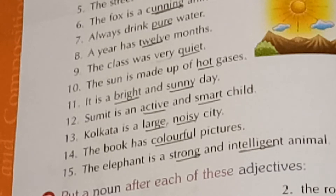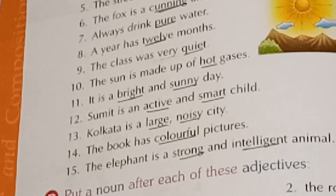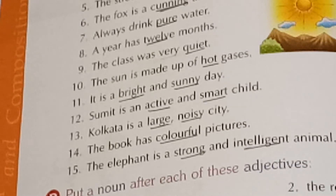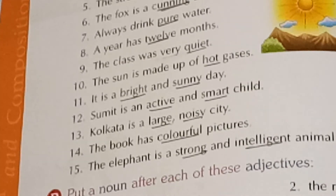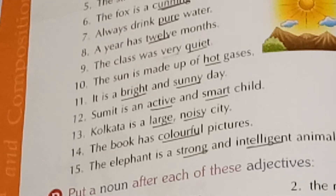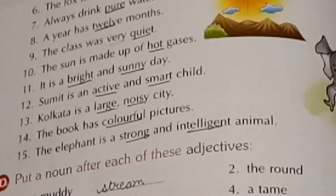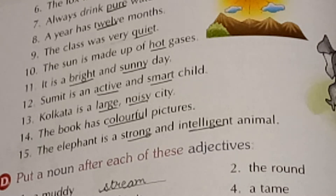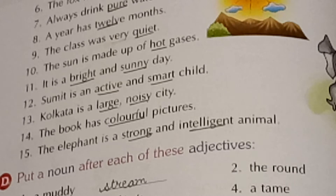The sun is made up of hot gases — what kind of gases? Hot gases. It is a bright and sunny day — what kind of day? The day is bright and sunny, so 'bright' and 'sunny' are the adjectives. Sumit is an active and smart child — what kind of child is Sumit? Active and smart. Kolkata is a large, noisy city — 'large' and 'noisy' are the adjectives. The book has colorful pictures — 'colorful' is the adjective. The elephant is a strong and intelligent animal — so 'strong' and 'intelligent' are the adjectives.